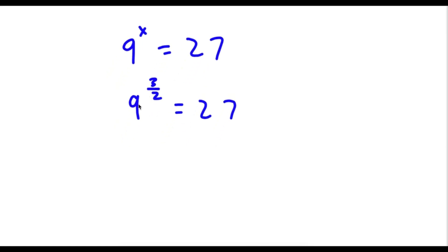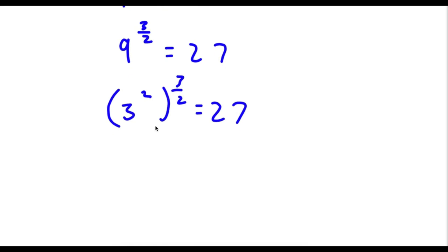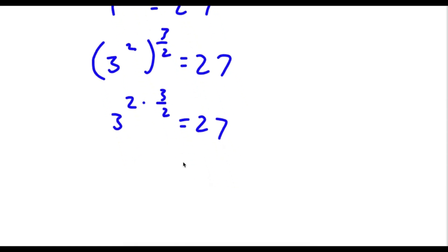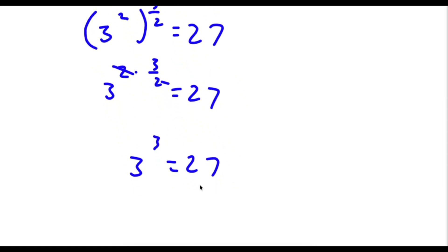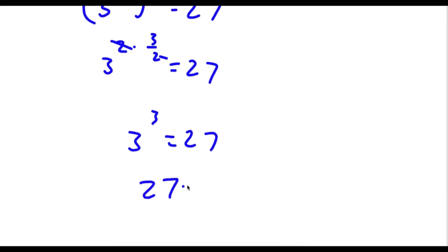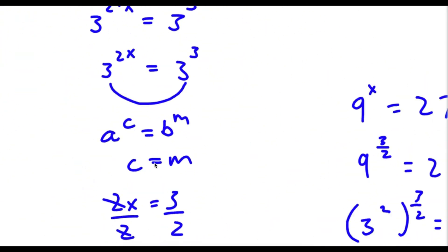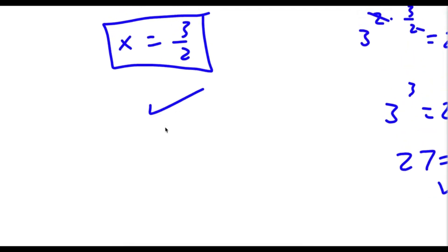Now 9 is the same thing as 3 squared. So I have 3 squared to the power of 3 over 2 is equal to 27. Now I have 3 to the power of 2 times 3 over 2 is equal to 27. These two cancel out, so I'm left with 3 to the power of 3 is equal to 27. And 3 to the power of 3 is 27, so if 27 equals 27, our solution is correct.